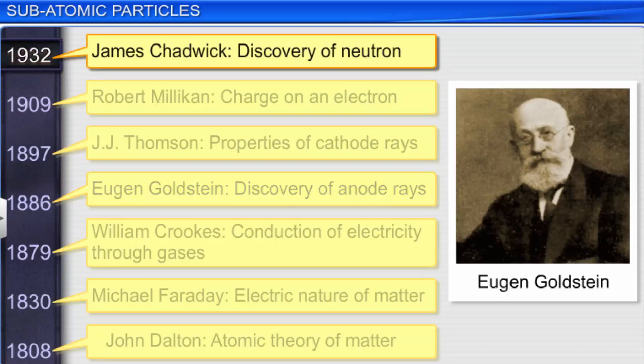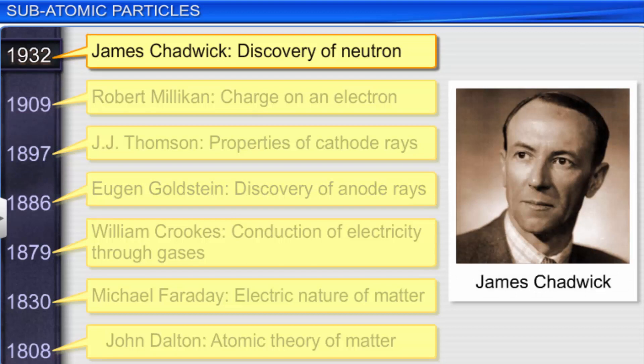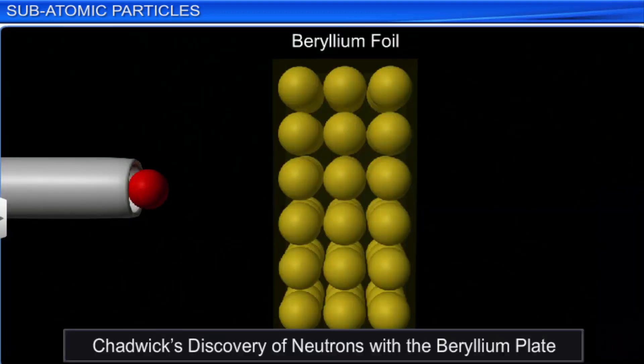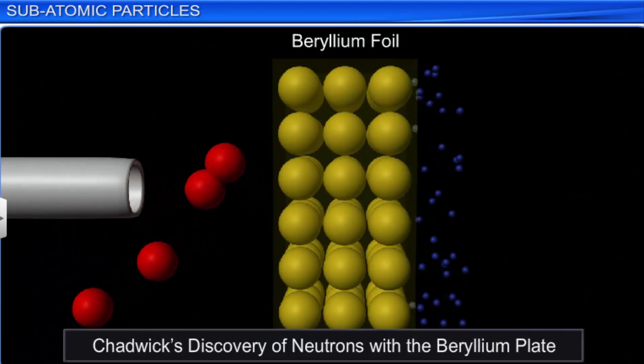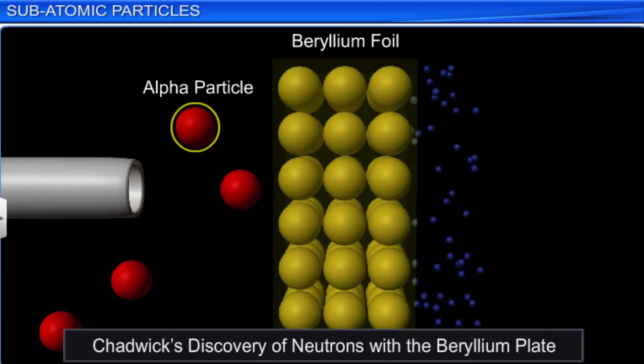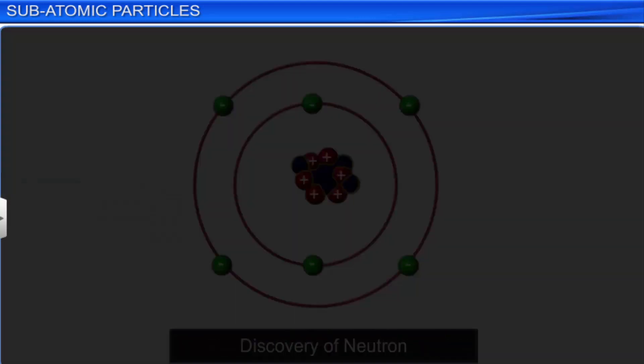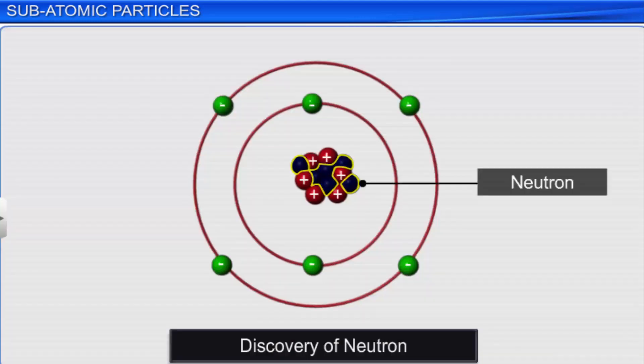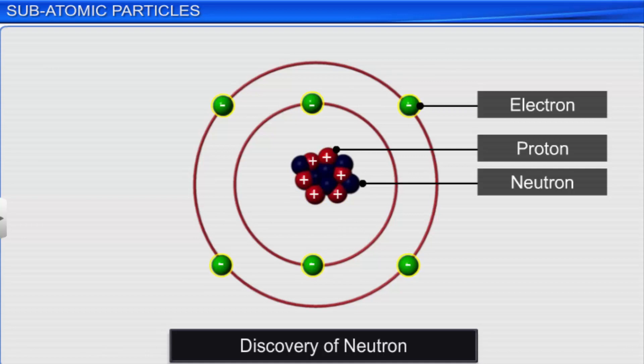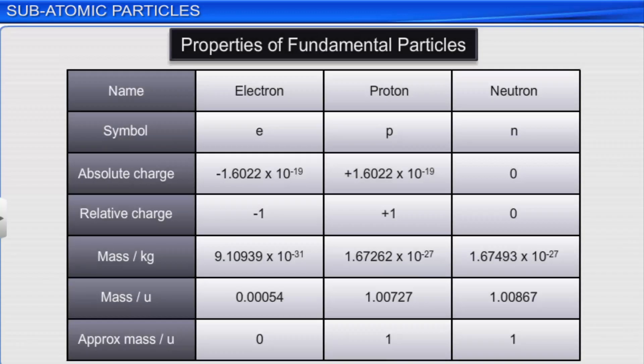Later in 1932, James Chadwick proved the presence of these heavy neutral particles through a series of scattering experiments. In one of his experiments, on bombarding a beryllium plate with alpha particles, Chadwick observed the emission of a neutral particle whose mass was equivalent to that of a proton. He named this particle as neutron. After all the subatomic particles were discovered, it was concluded that an atom is made up of protons or positively charged particles, electrons or negatively charged particles, and neutrons that are neutral particles. The table here summarizes the properties of these fundamental particles.